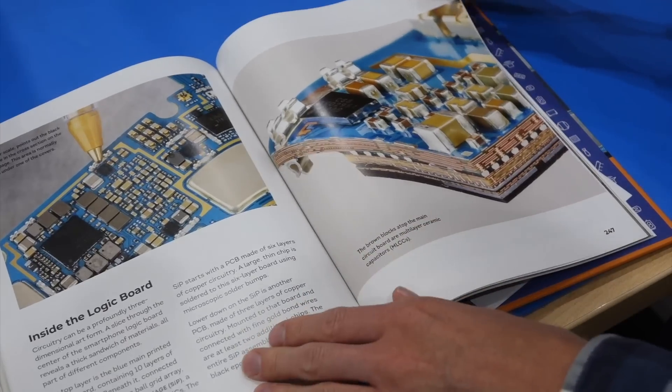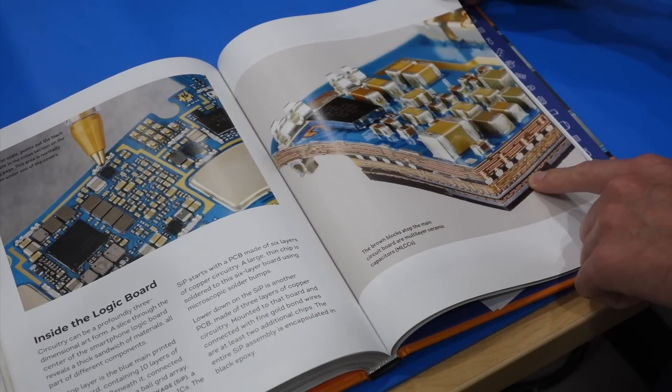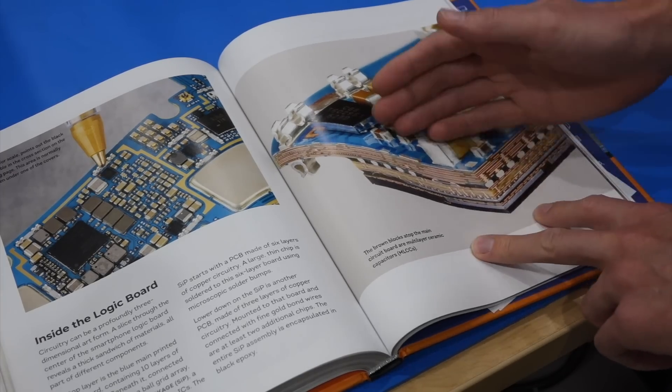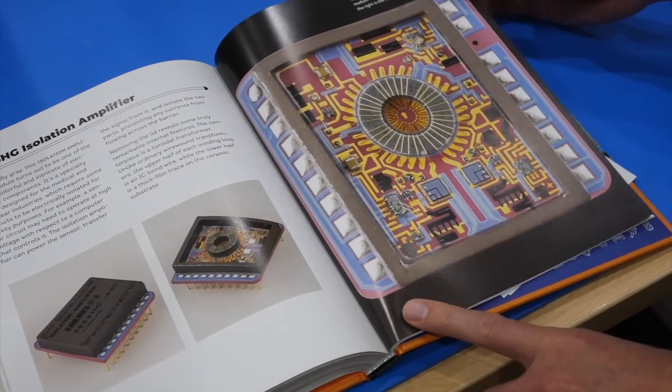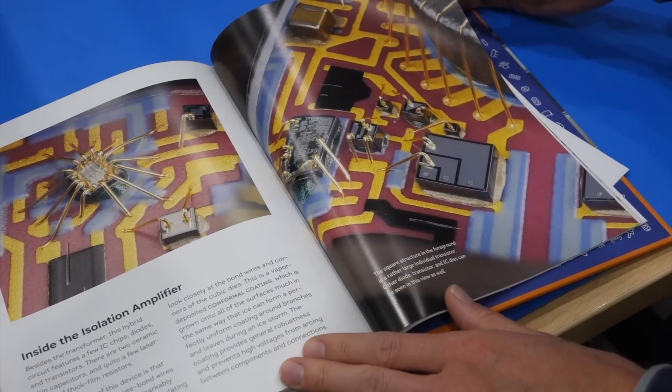And so this is of course the cover photo here where there's the cross section of the smartphone circuit board where you can see that it's a very three-dimensional structure. Lots and lots of layers. Another good one is this isolation amplifier which is just a work of art. So beautiful.